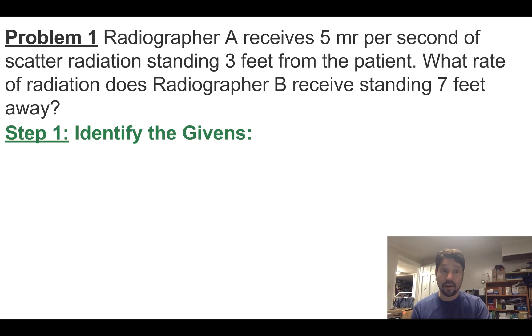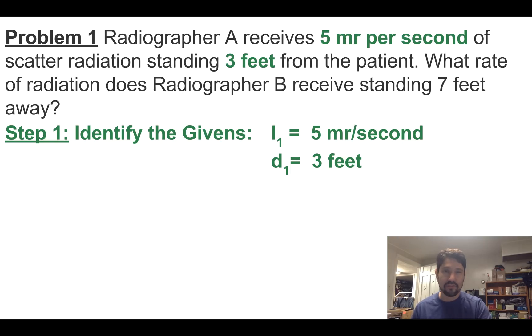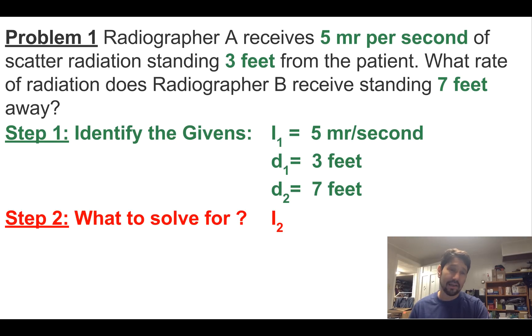So first let's find out what our givens are. We've got I1 right there in the problem, five millirads per second, and D1, hey, we're three feet away. We've got D2, what's going to happen at seven feet away? And what we're going to solve for is I2.